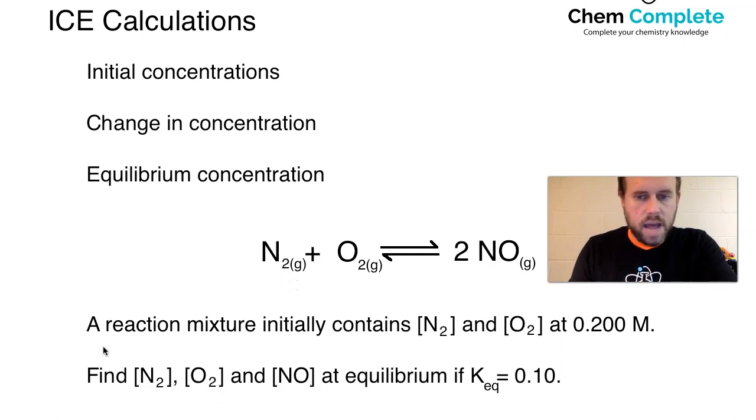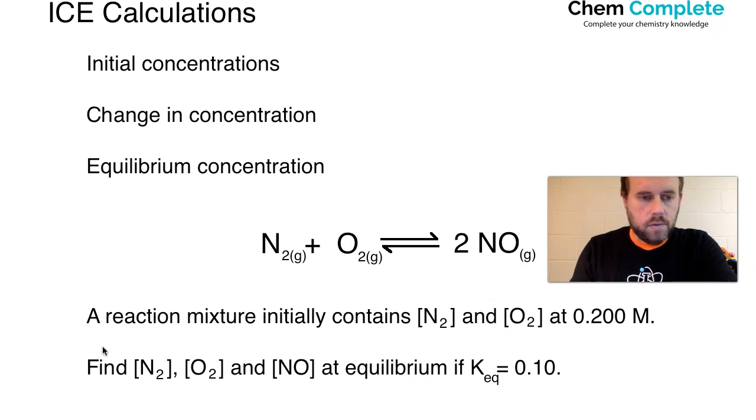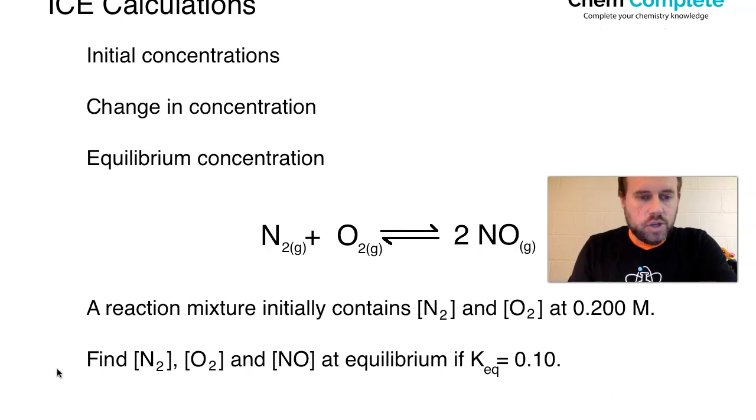The problem that we have here reads as follows: A reaction mixture initially contains N2 and O2 at a concentration of 0.200 molarity. And the question says, find the concentration of N2, O2, and NO at equilibrium if KEQ is equal to 0.10.